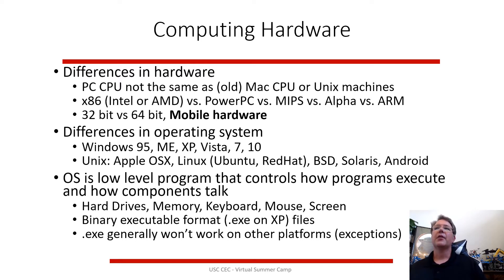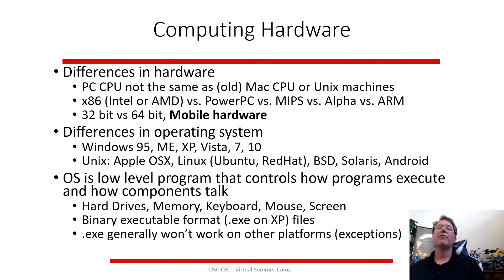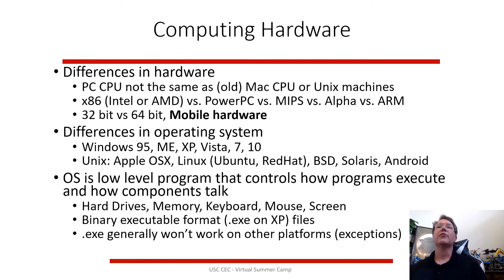There are also lots of differences in operating systems. You can run many versions of Windows, with a new version every few years. On the Unix side, Apple's operating system is actually based on Unix, and Linux, Android, and other variants are all Unix-based. The operating system is the low-level program that controls how programs execute and how components talk — it runs right on the hardware, dictating how you write files, access memory, and how programs work.